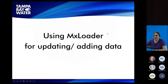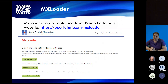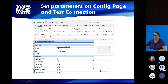First I want to cover MX Loader very quickly. This is available from Bruno — I think Portolori — from his website. You can go there and download his Excel spreadsheet. It's an .xlsm file, so it has some macros in it that allow it to interface with Maximo. There is an updater if you already have it and need to update to the latest version, and there's also a user guide which is extremely helpful in using his MX Loader Excel spreadsheet.